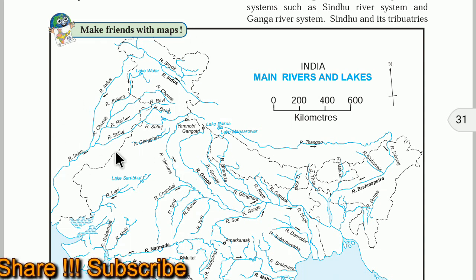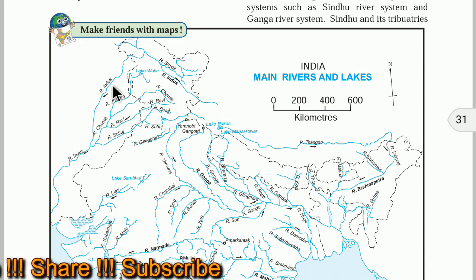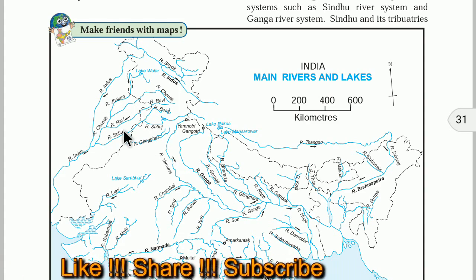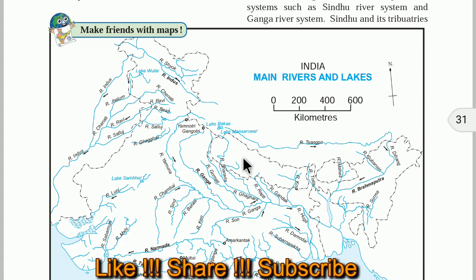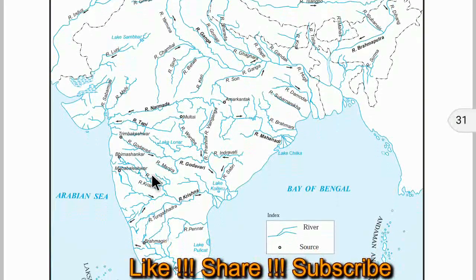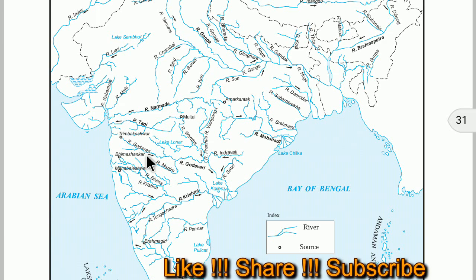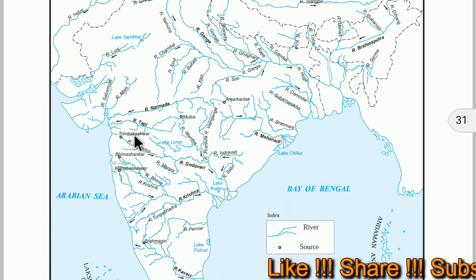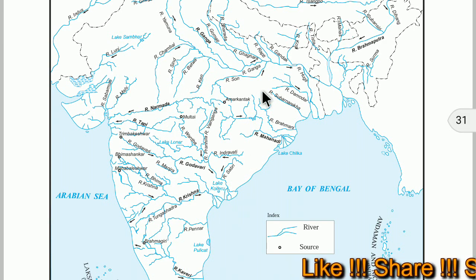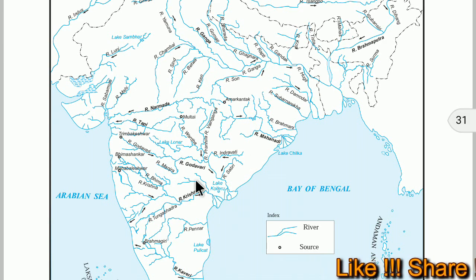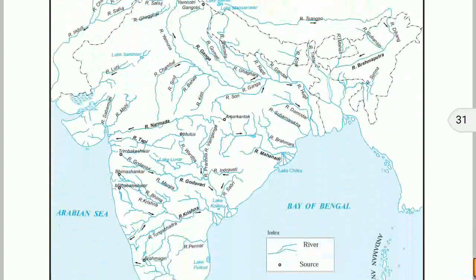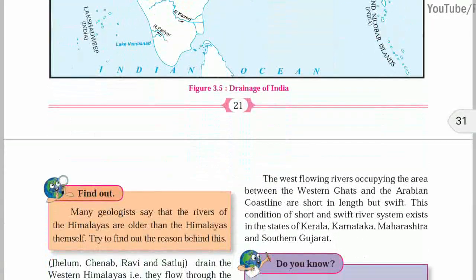These are the Himalayan rivers. The tributaries of Indus river are also shown here. We also have peninsular rivers like Godavari, Krishna, Kaveri, and Mahanadi — these originate from the Peninsular plateau. These are the main rivers of India.